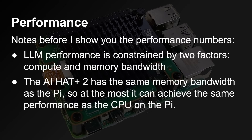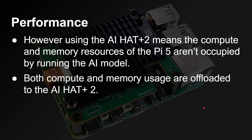Now we need to talk about performance. LLM performance is constrained by two factors: compute and memory — the Hailo chip AI accelerator and that 8 gigabytes of RAM. The AI Hat Plus 2 has the same memory bandwidth as the Pi 5, so at most it can achieve the same performance as the CPU on the Pi 5 because it will be bottlenecked by memory bandwidth. However, it is worth noting that the compute and memory resources of the Pi 5 aren't occupied by running the AI model — both are offloaded to the AI Hat Plus 2.